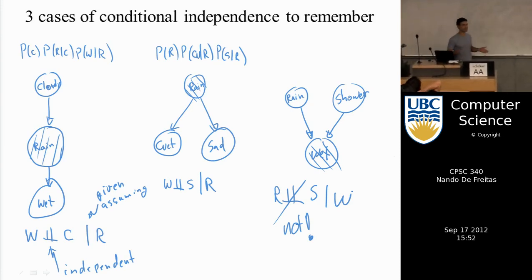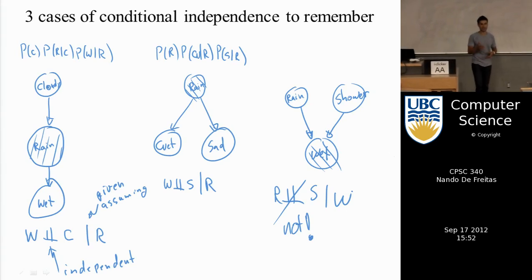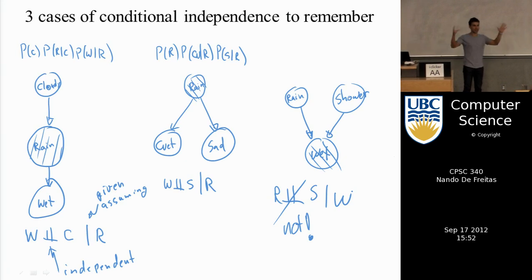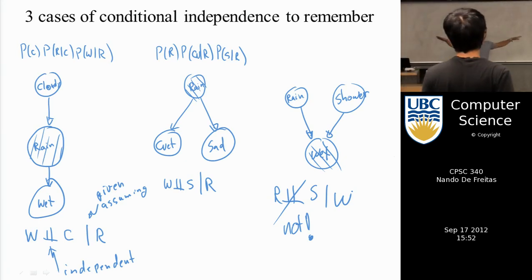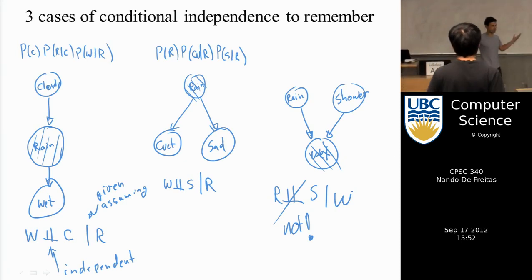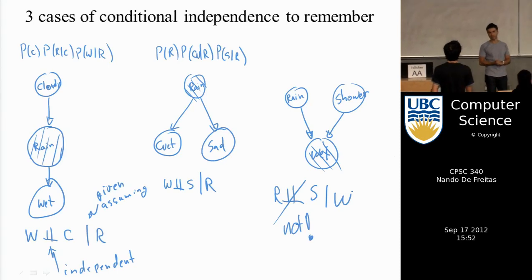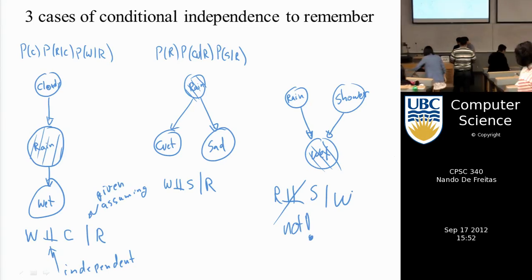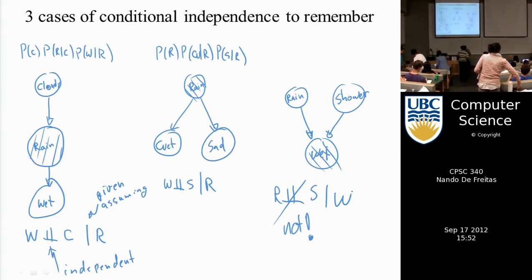Those are the three dependency rules. In the next class I will finish this example and illustrate that you only need to know your parents, children, and partners — your Markov blanket — in order to know everything about a node in the graph.